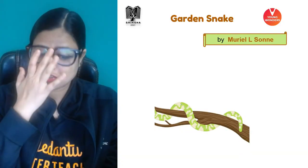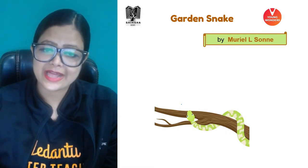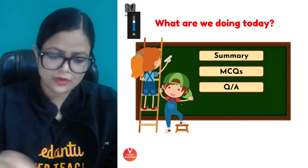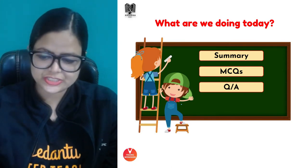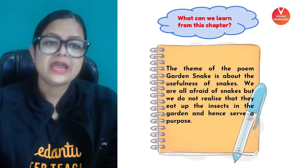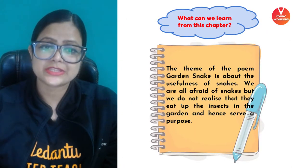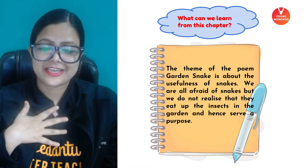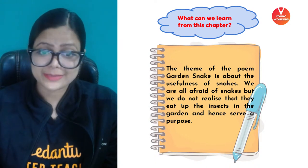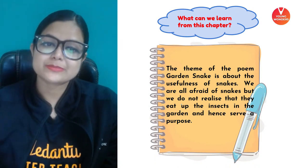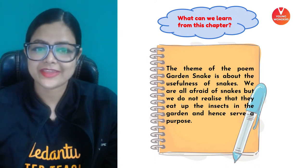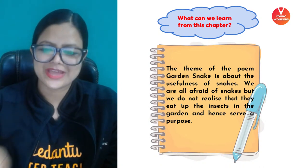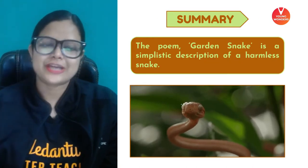Today we will study the poem 'Garden Snake' by Muriel L. Sonnet. First, we will complete our summary, then do multiple choice questions, and then question and answer. The theme of this poem is about the usefulness of snakes. Even though snakes are scary creatures, they have some benefits — when they come into our garden, they eat harmful insects, so they serve a purpose.